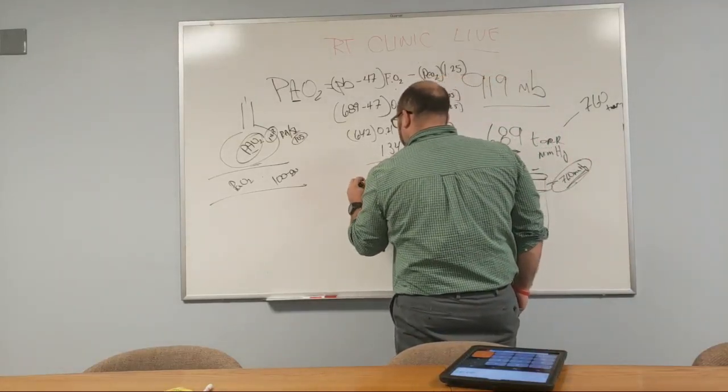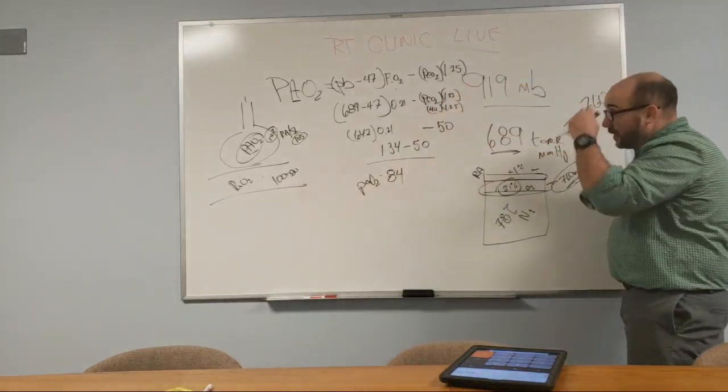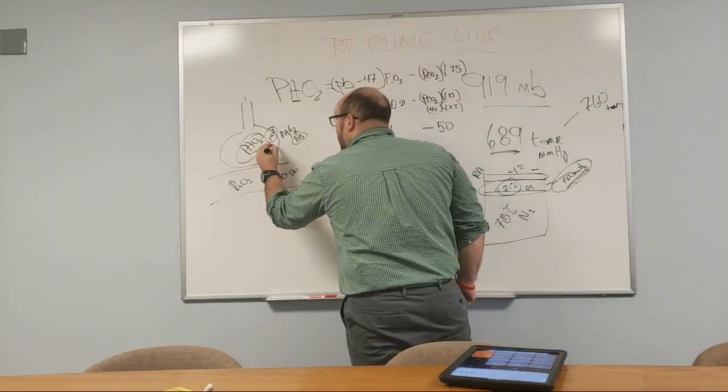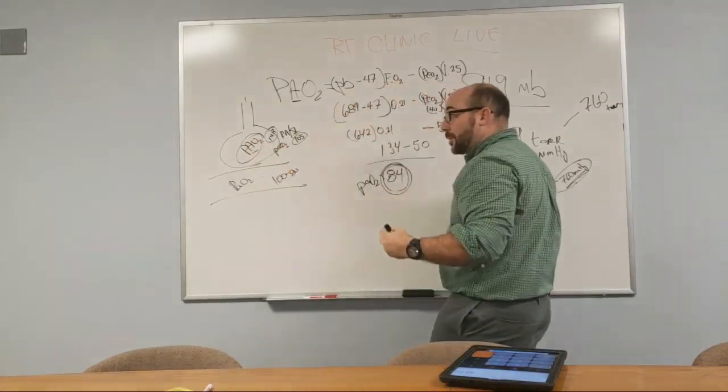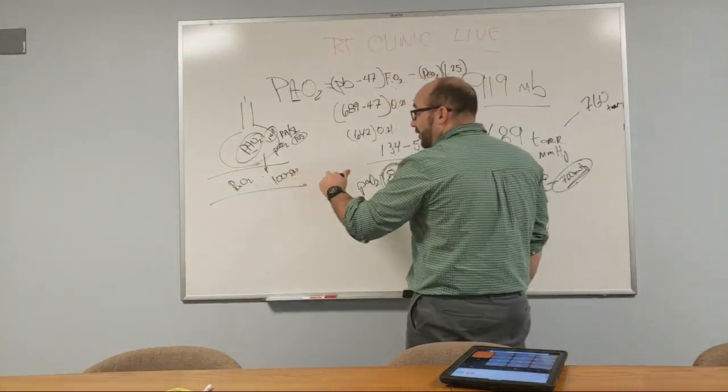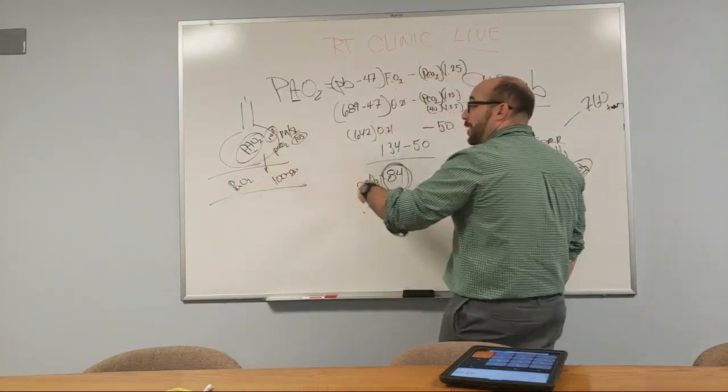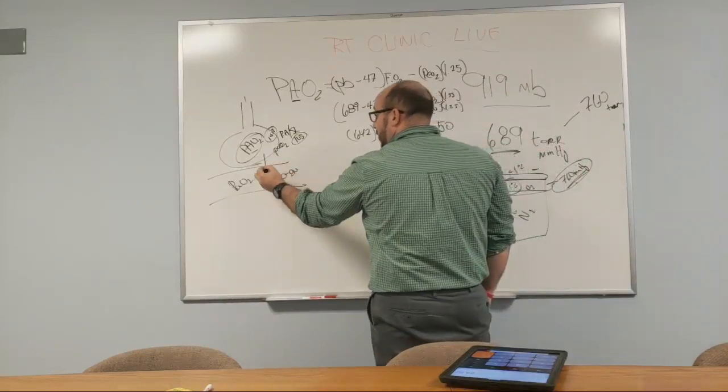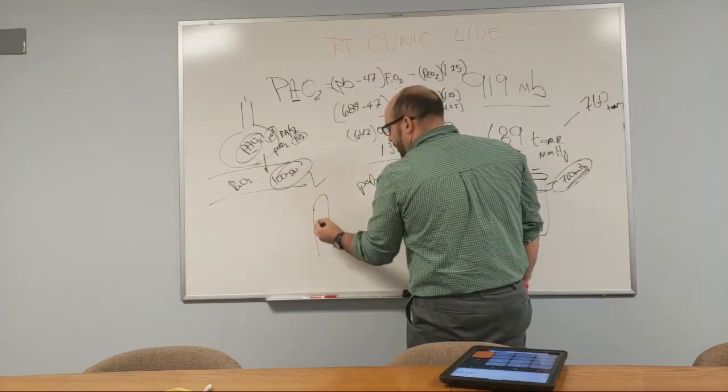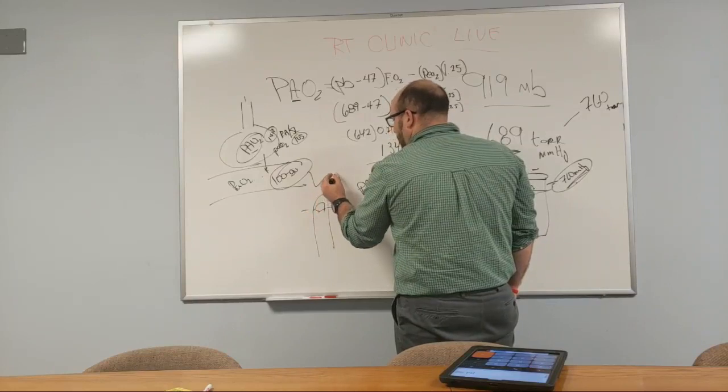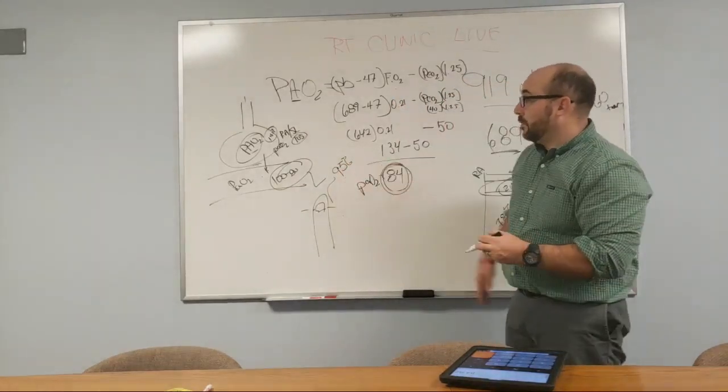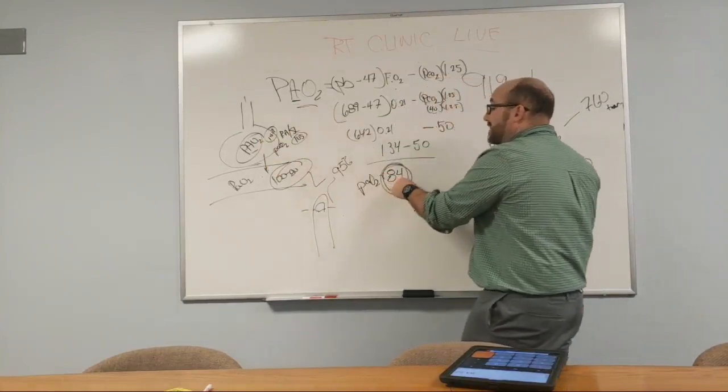So this may not seem like a big deal to everybody that's not a respiratory therapist, but this is a pretty big deal. So this means 84 is the maximum amount of PAO2 you can have here. So even if your lungs are functioning appropriately, you're going to have 84 in your bloodstream and it can't go any higher.